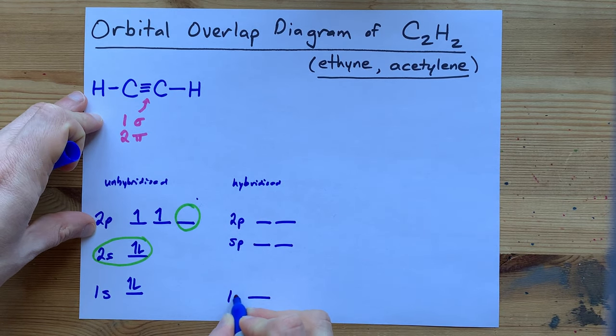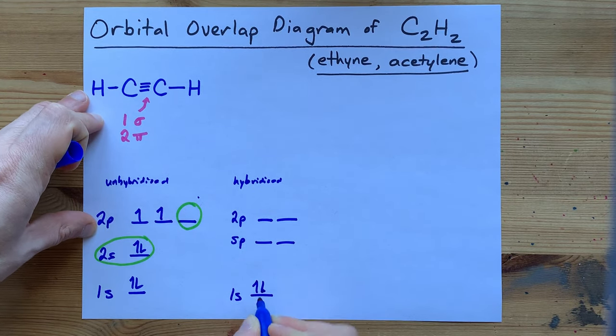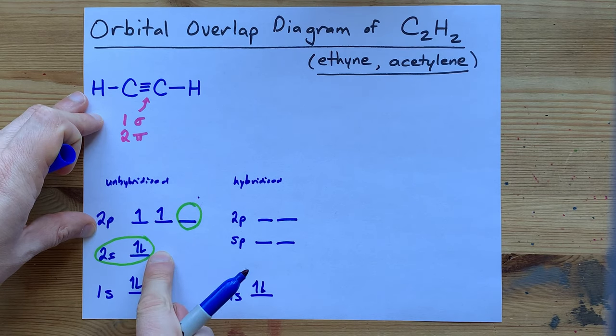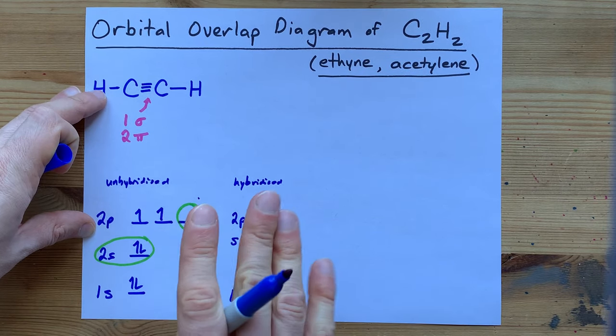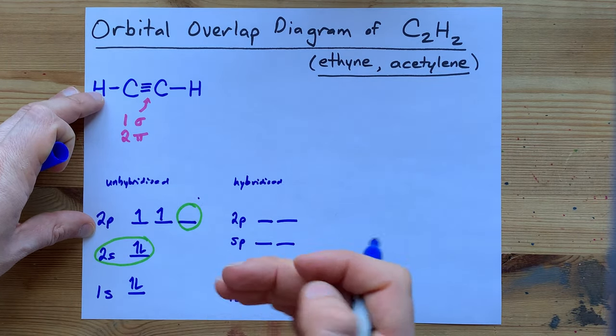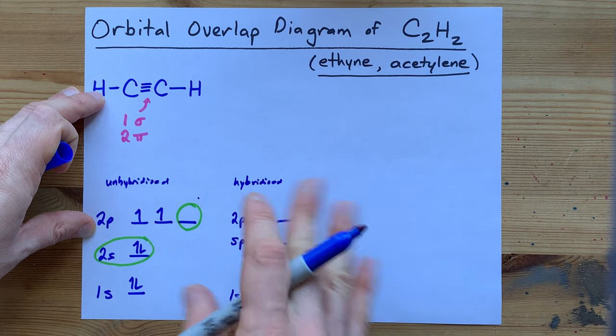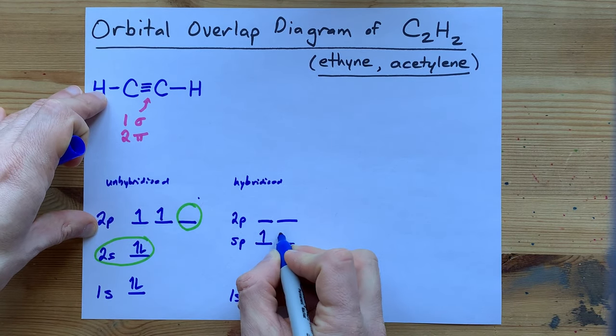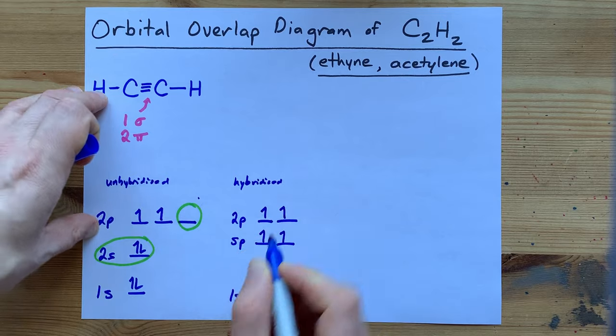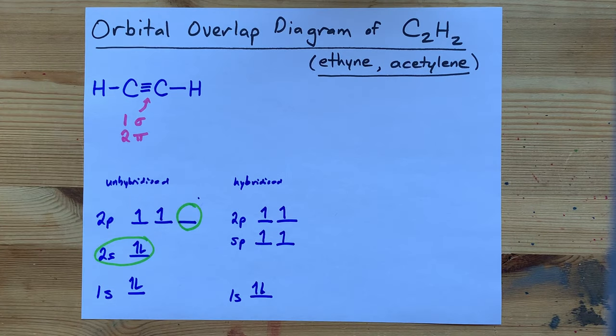Now the 1s did not change. I'm just going to emphasize that by putting it here. And this had 4 electrons in it total. You actually have to violate, I think it's the Aufbau principle here or Hund's rule or something. 1, 2, 3, 4. Spread your electrons out.